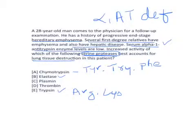Option C is plasmin. Plasmin is a serine protease present in the bloodstream. Its function is to break down fibrin clots. When blood clotting occurs, fibrinogen is converted into fibrin, forming a clot. The lysis of that blood clot — fibrinolysis — is carried out by plasmin.